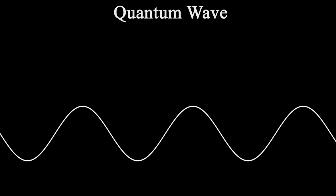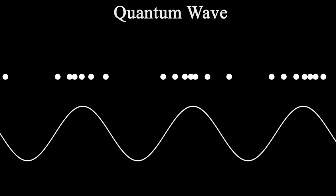Now quantum waves follow the exact same principles, except for one key difference. Instead of the shape of the wave affecting the sound that we hear, it affects the probability of where we observe a particle. So if we take a quantum wave that looks like this, and we make several repeated observations, we can see that over time we observe more photons where the wave is the highest, and less where it is the lowest. If we look at the results from an actual quantum experiment, you can clearly see the wave pattern here.